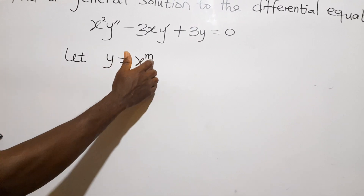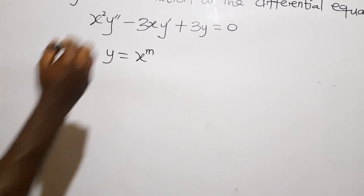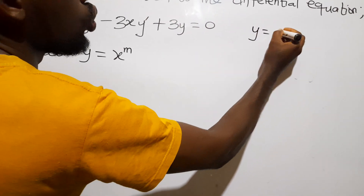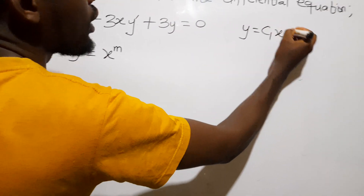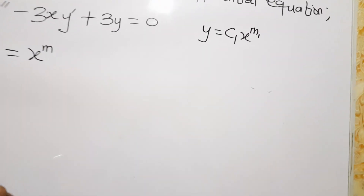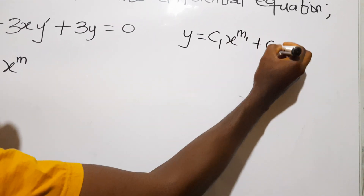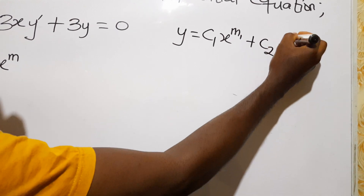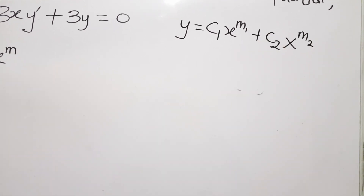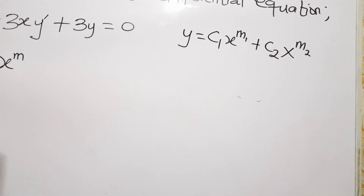If m gives two distinct roots, then the general solution y equals c1·x^(m1) plus c2·x^(m2), where m1 and m2 are the two distinct values of m.